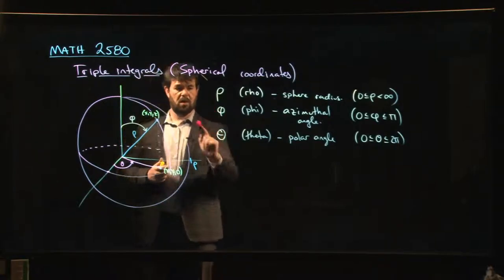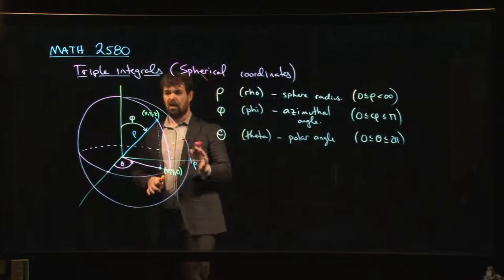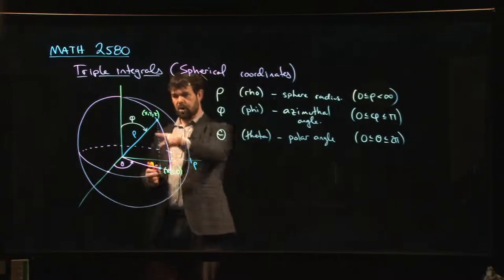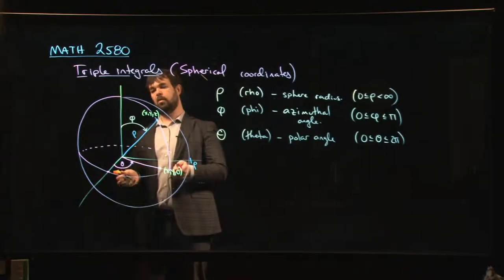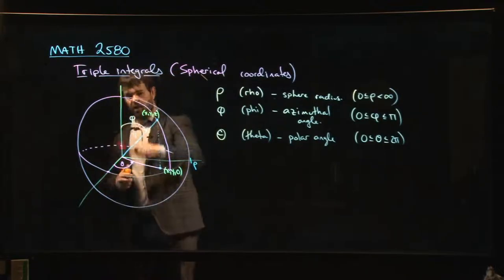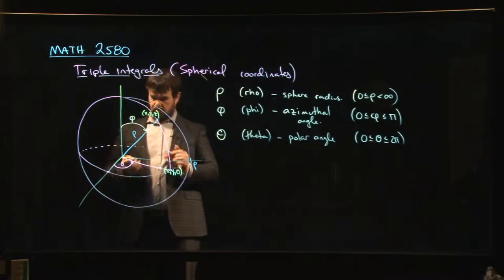So, sphere, cone, half plane, those are what you get. How do we relate these spherical coordinates back to the rectangular coordinates that we're familiar with? Well, we've got our x, y, z coordinates labeled there. We can see some relationships. We've still got our x, y, z axes in here.